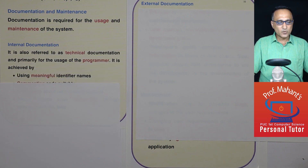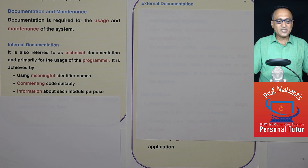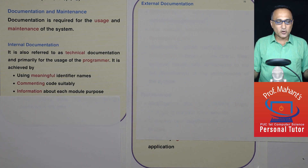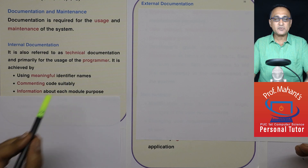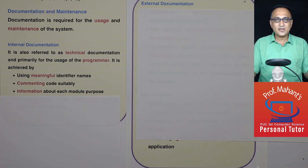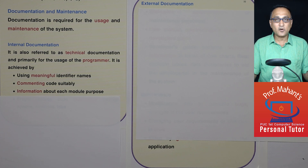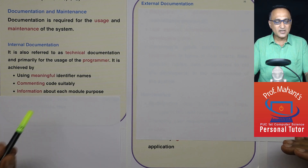Internal documentation is also referred to as technical documentation, and it is for the programmers, developers, or software engineers who are going to use it in future. You help internal documentation by giving meaningful names to variables — for example, instead of naming a variable 'income_tax', if you just give it a short confusing name, it is unclear. So give meaningful names to variables and write proper comments in your code, like we had written comments in algorithms, so that the logic of the algorithm can be understood easily.